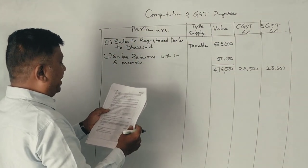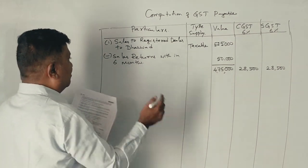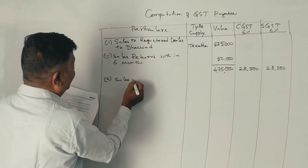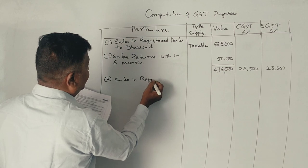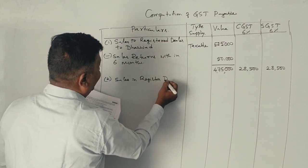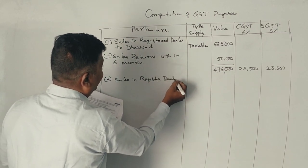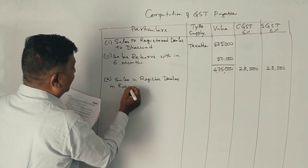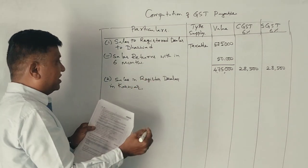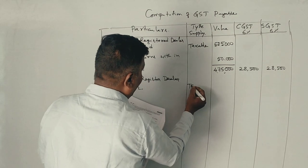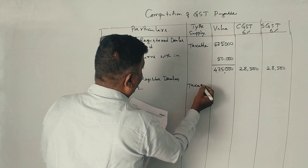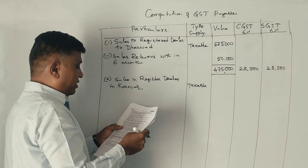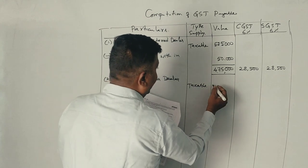Sales made to a registered dealer in Carver. That is the taxable supply. The total taxable value is 4,10,000.